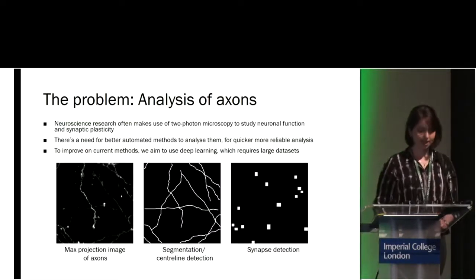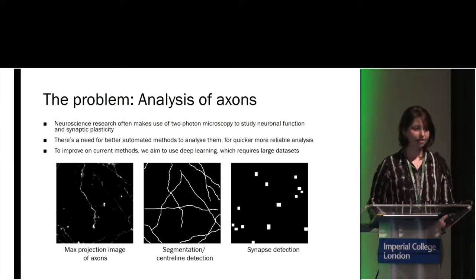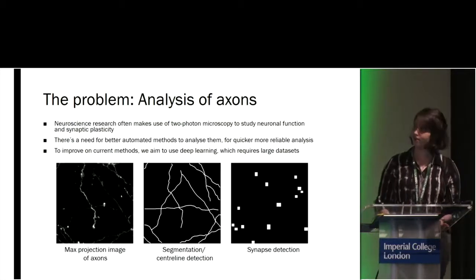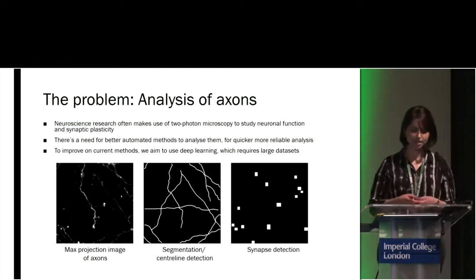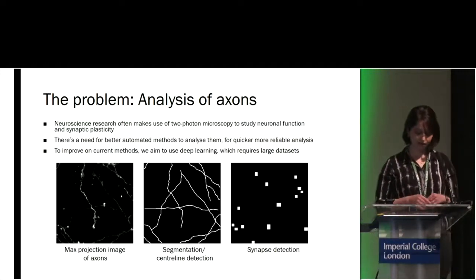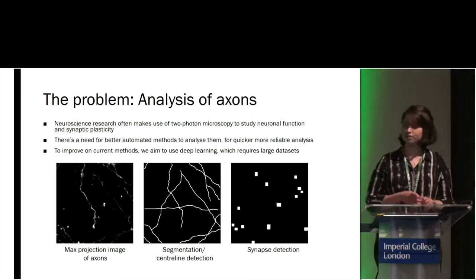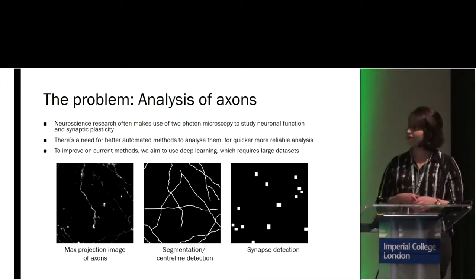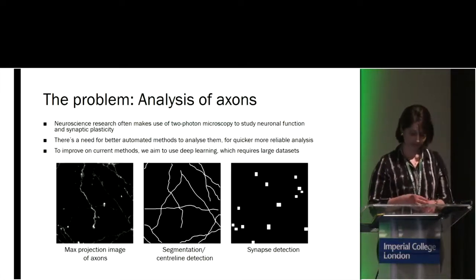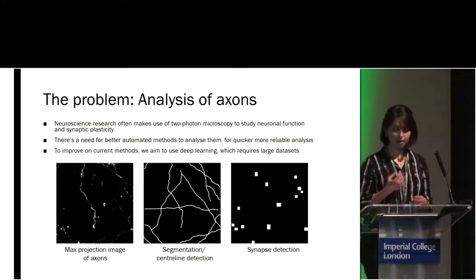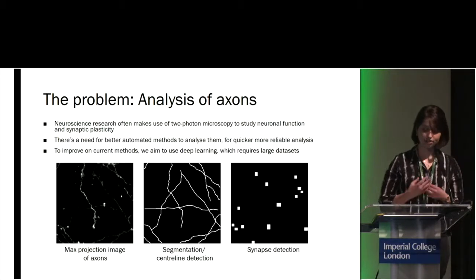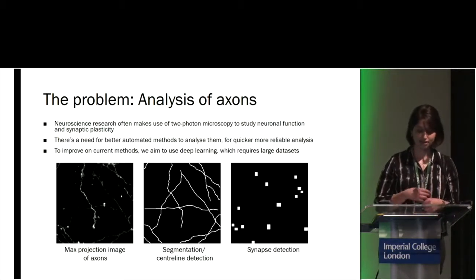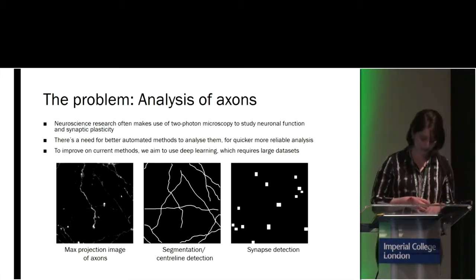During my PhD we collected a dataset of axons using two-photon microscopy, and this kind of data is often used in neuroscience to study things like synaptic plasticity and neuronal function. To do this we want to segment the axon and detect the synapses. These methods go hand in hand where we can segment the axon and extract the synapse location using the axon backbone intensity.